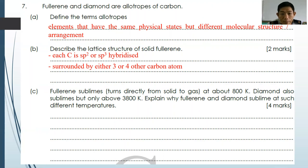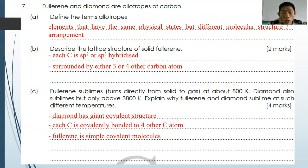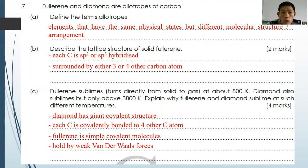Fullerene sublimes at about 800 K while diamond sublimes above 3800 K. Explain why they sublime at different temperatures. Diamond has a giant covalent structure where each carbon is covalently bonded to four other carbon atoms, building a giant network with a very high melting point. Fullerene is a simple covalent molecule held by weak Van der Waals forces, so it sublimes at a relatively lower temperature compared to diamond.